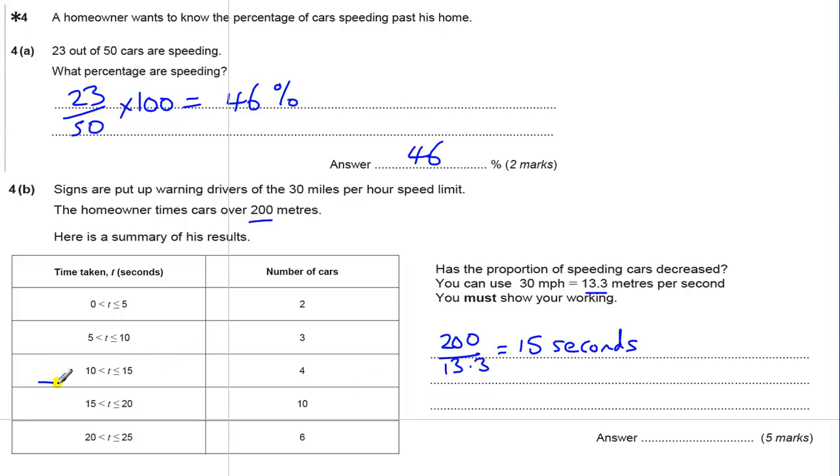Once you have that, you can see that this is where the table cuts off. Now, all these above are the speeders. That's not intuitive straight away, but if you think about it, if you're going faster than 13.3 meters per second or faster than 30 miles per hour, you're actually going to take less than 15 seconds. If you're taking between 0 and 5 seconds, you're probably going quite fast compared to the 30 miles per hour. So these guys are all the speeders.